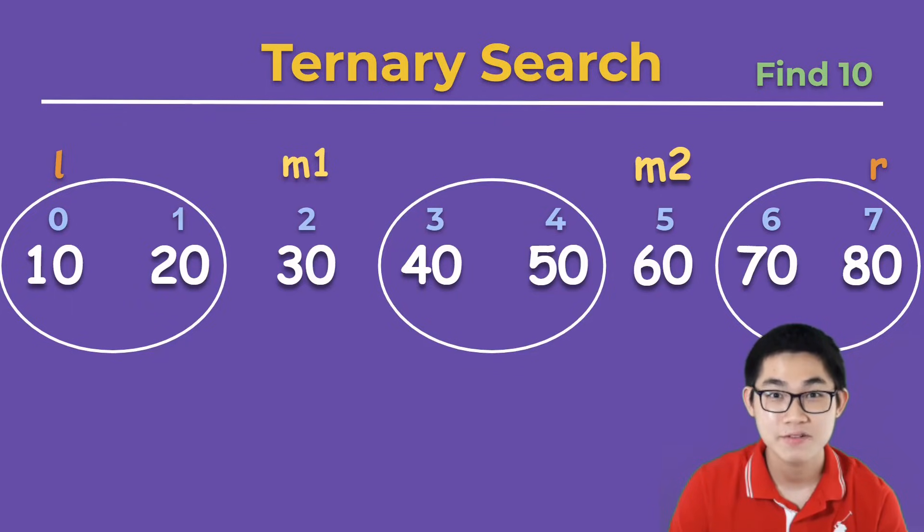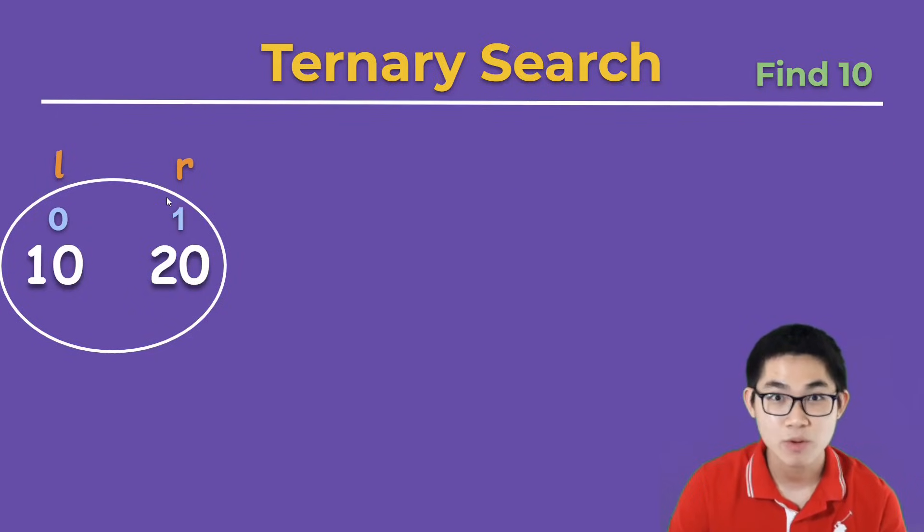We split the array into three groups. And since we're trying to find 10, and 10 is smaller than 30, then 10 must be in the first group. So we simply move r over to the first group, like this. And then we repeat this process.